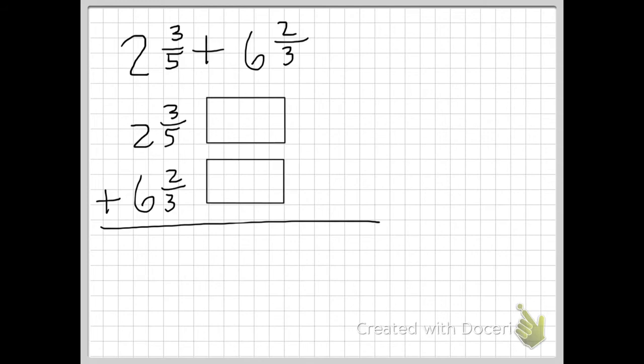I'm going to go ahead and start by creating the area model for 3 fifths followed by the area model for 2 thirds. Now starting with 3 fifths I went ahead and created my area model. It's partitioned into fifths and I have the 3 parts shaded in. Our area model representing 2 thirds is partitioned into thirds and I have 2 parts shaded in.